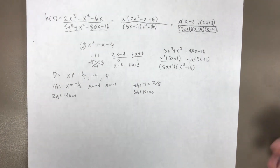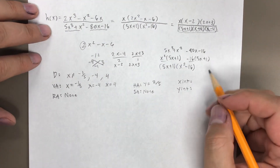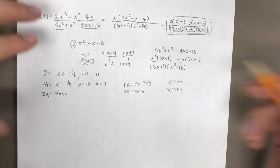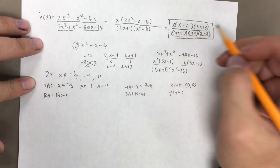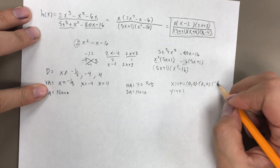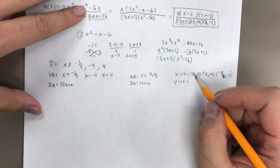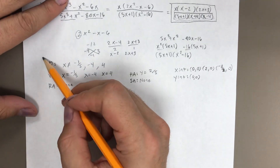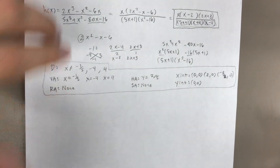Now let's find the x-intercepts and y-intercept. The x-intercepts come from the numerator of the simplified expression. Setting x equal to 0 gives the intercept (0, 0). Setting x minus 2 equal to 0 gives x equals 2, so (2, 0). Setting 2x plus 3 equal to 0 gives x equals negative 3/2, so (negative 3/2, 0). For the y-intercept, plugging in 0 still gives 0, so the origin is both the x-intercept and the y-intercept.